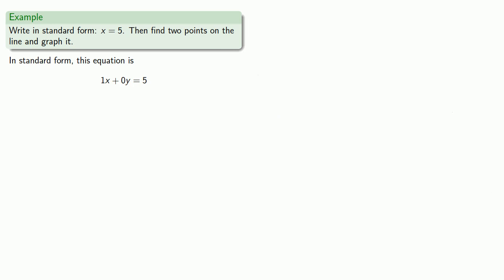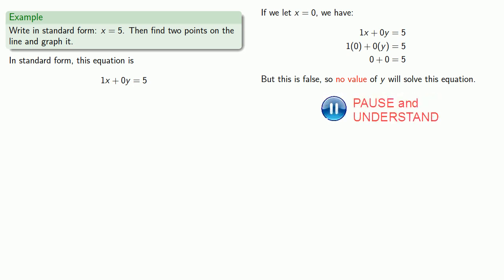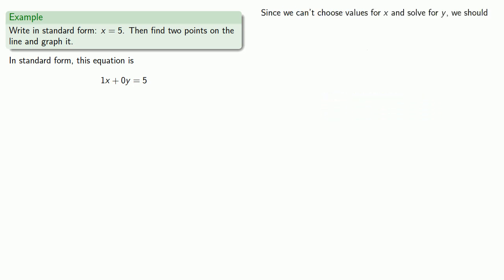Now let's look for ordered pairs (x, y) that satisfy this equation. We might try to let x equals 0 - equals means replaceable. So we'll replace x with 0 in our equation and we find this is false. And so no value of y will solve this equation. Well, that means we can't choose values for x and solve for y, so we should choose values for y instead.